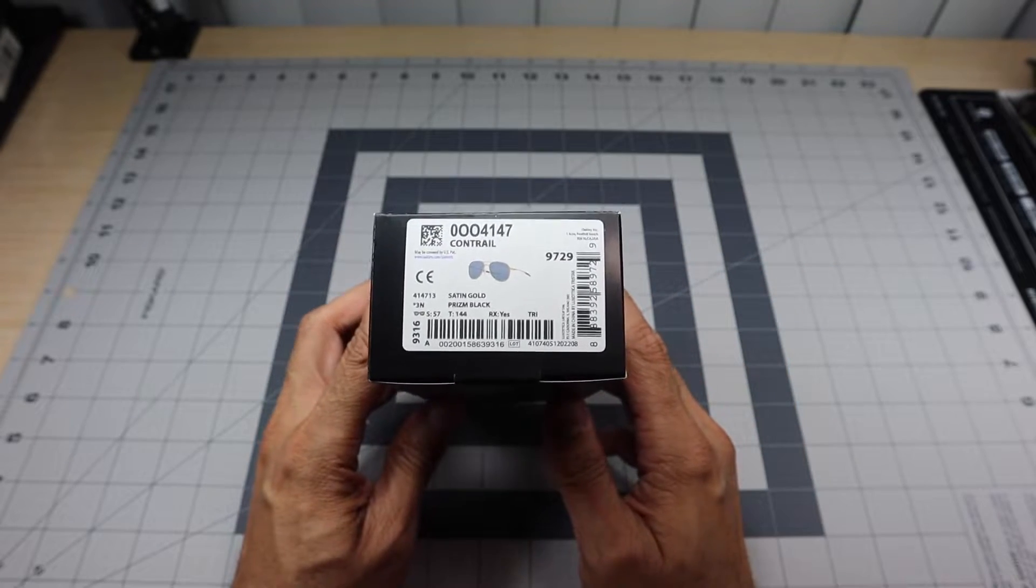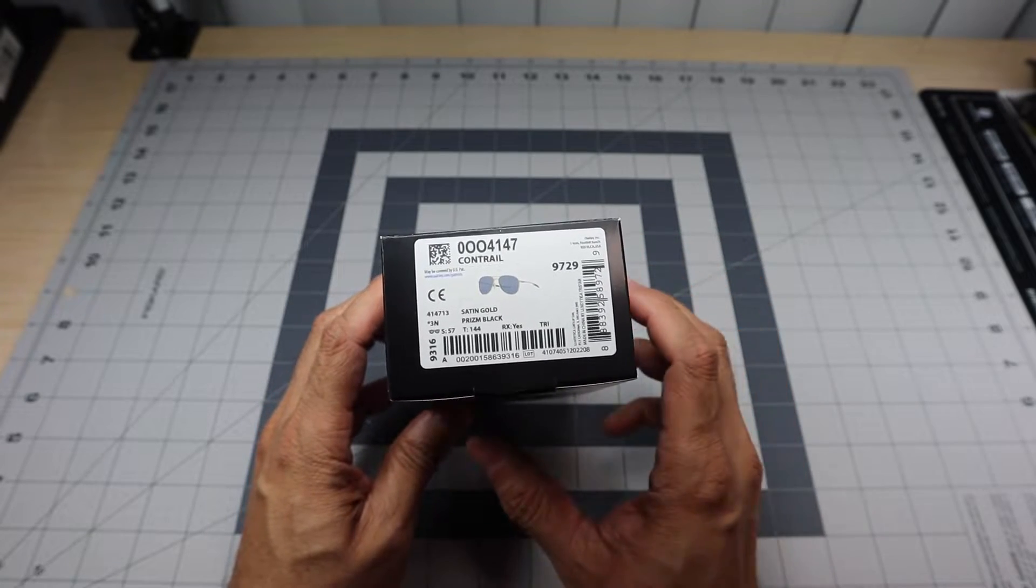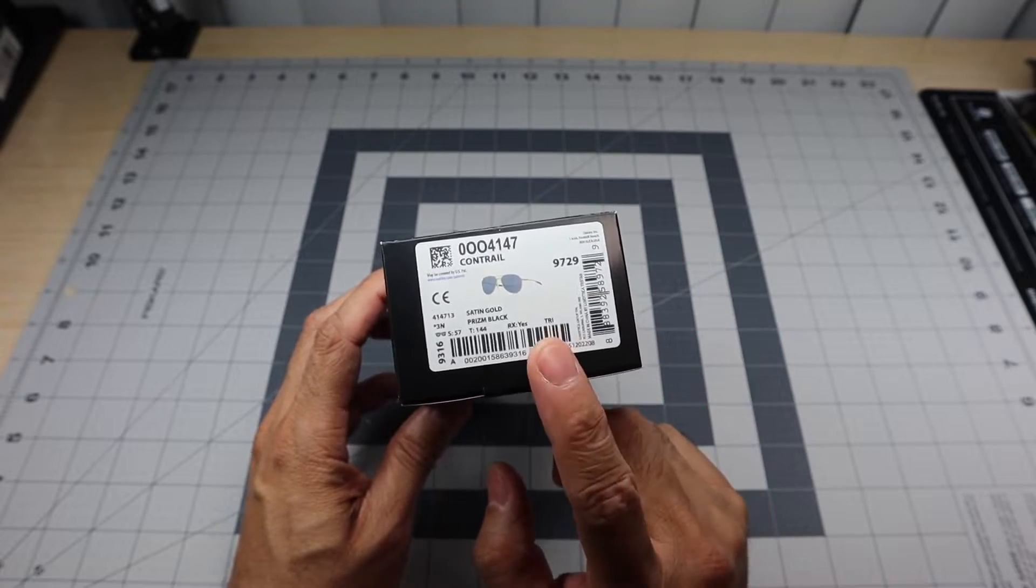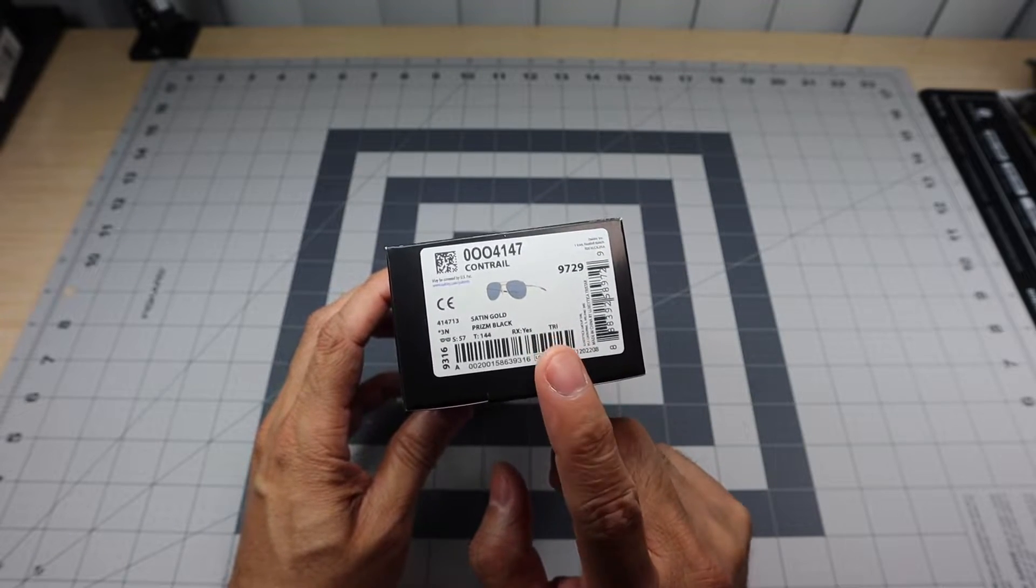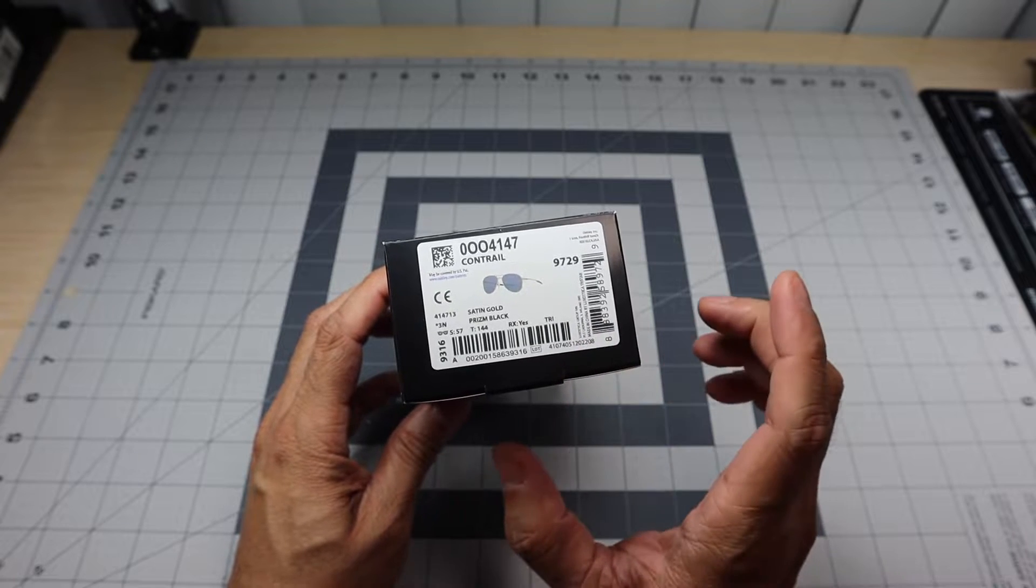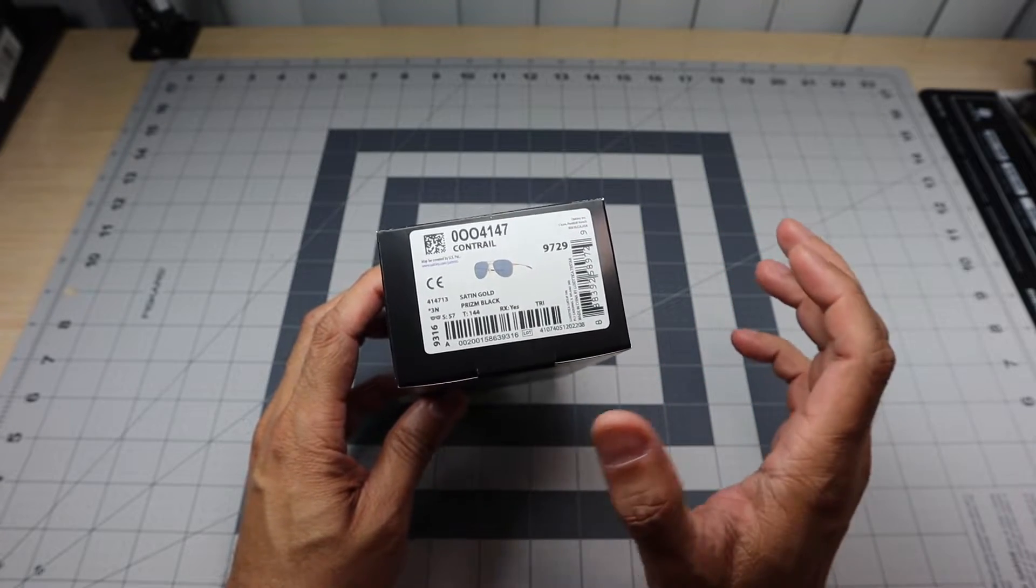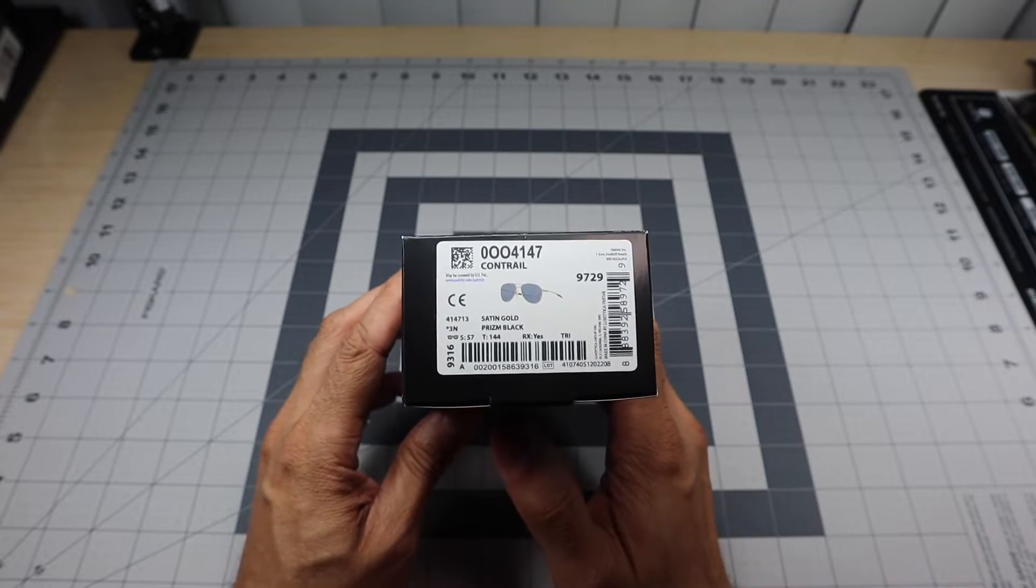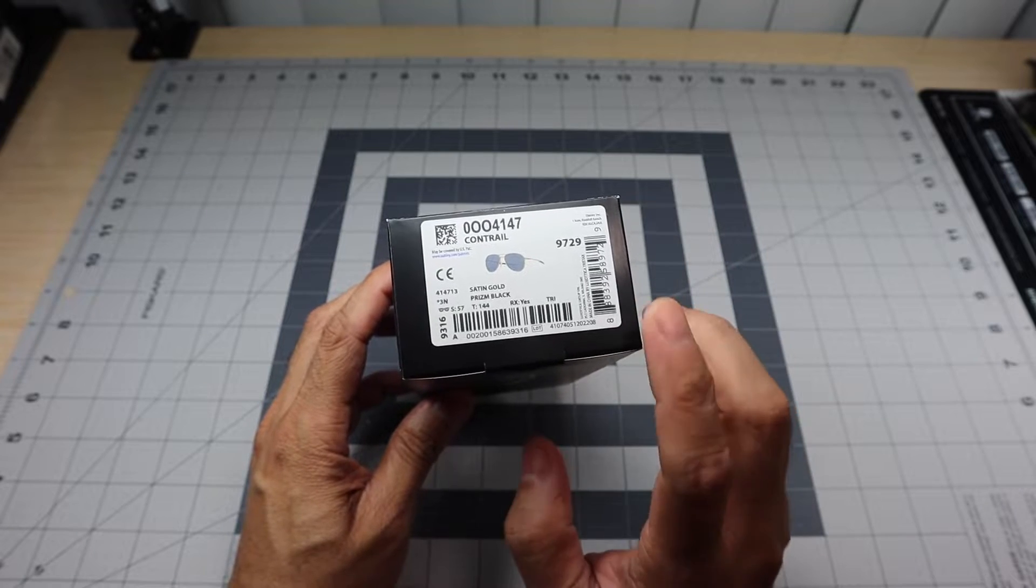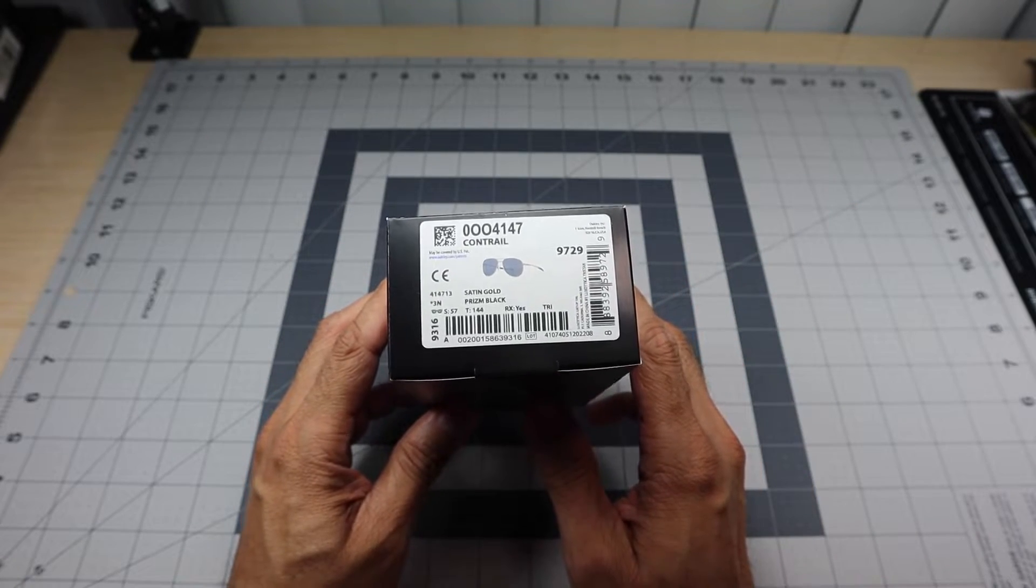If you're not familiar with the Contrail, basically it's a modern take on the classic pilot sunglasses. And I think this color, the gold frame with the prism black lenses, is the best example of that. I know a lot of people associate the silver frame with black lenses with pilot ones, but when I think of the quintessential pilot sunglasses, it is the gold frame. So that's why I wanted to go ahead and pick them up.